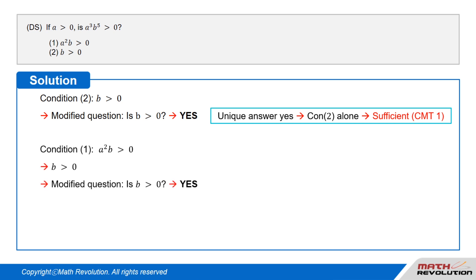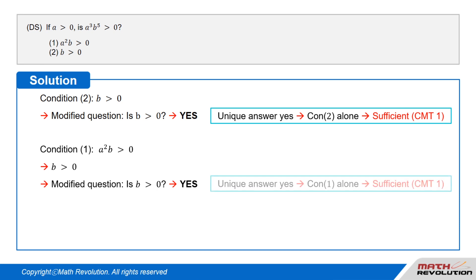Condition one tells us that a squared times b is greater than zero. Since only odd exponents remain, a squared times b is greater than zero becomes b is greater than zero. Thus the answer to the question 'is b greater than zero?' is a unique yes, so condition one is also sufficient, according to CMT1, which states that the answer will be in terms of a unique yes or no.